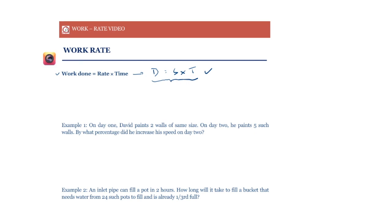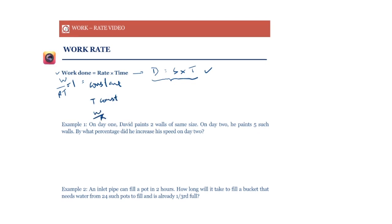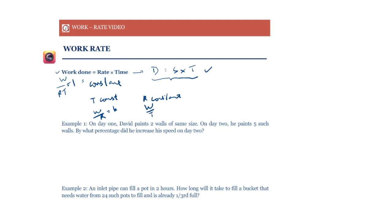We can say that work divided by rate times time equals one, which means it is a constant — a joint variation expression. So when time is constant, work varies directly with rate. When rate is constant, work divided by time equals k, so work varies directly with time as well.